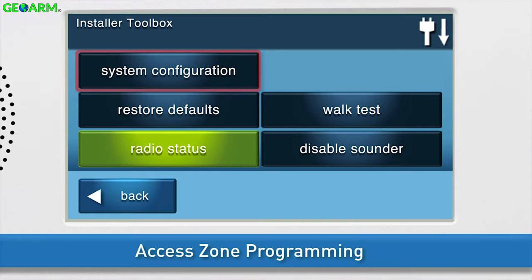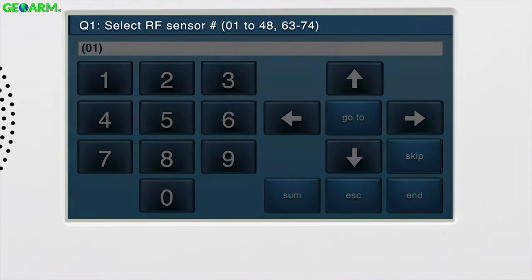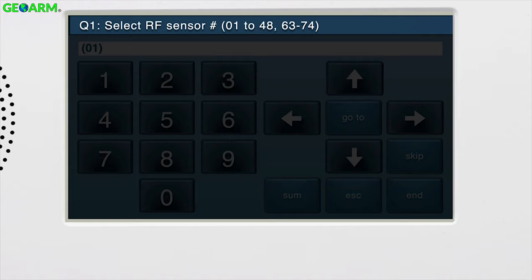To access zone programming, press System Configuration. You'll see Q1, select RF sensor number 01-48, 63-74 displayed in the upper ribbon of the screen. System Configuration is navigated via Questions and Sub-Questions. Wireless zones are programmed in Q1, so we're already on the correct question for wireless devices.